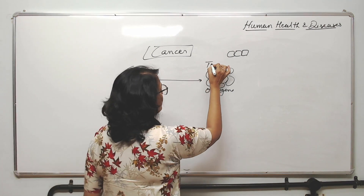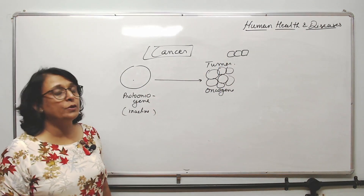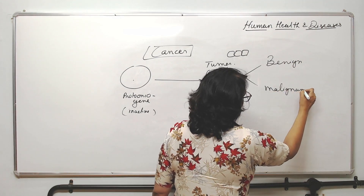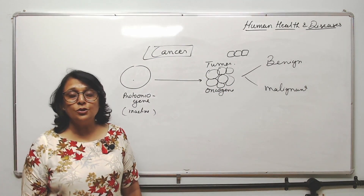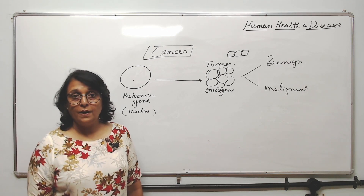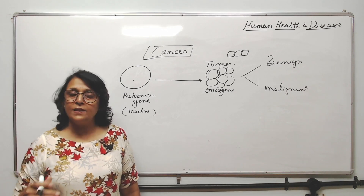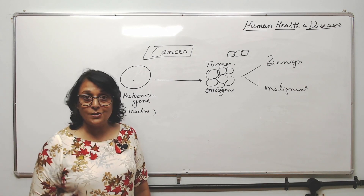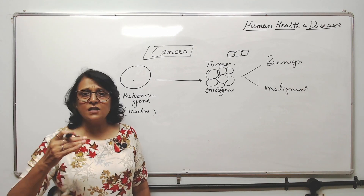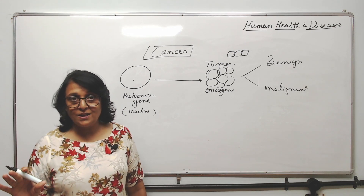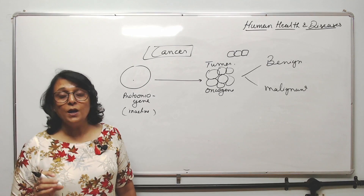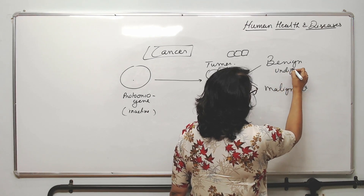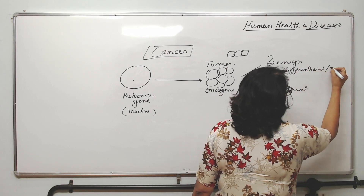When the oncogene is activated, the cell divides and a tumor is formed. Tumors are of two types: benign and malignant. In both types, the cells are undifferentiated — they are not going to become any specialized cells; they just divide continuously without becoming specialized tissue. We can relate this to meristematic cells in plants, which also just divide without getting specialized.